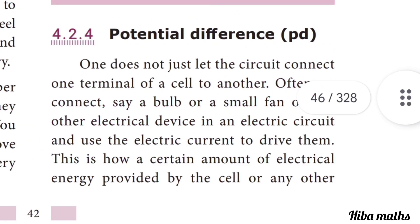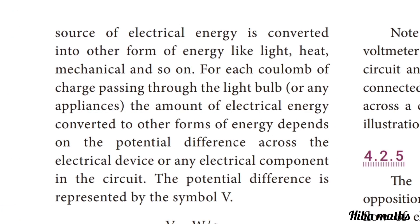For potential difference: one does not just connect one terminal of a cell to another. Often we connect a bulb, a small fan, or other electrical devices in a circuit and use electric current to drive them. This is how electrical energy provided by the cell is converted into other forms of energy like light, heat, mechanical, and so on. The amount of electrical energy converted for each Coulomb of charge passing through a device depends on the potential difference across it. The potential difference is represented by the symbol V.